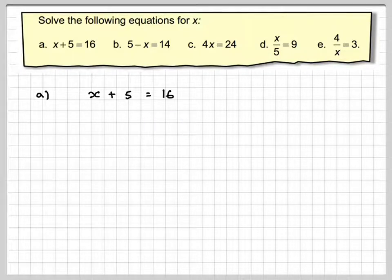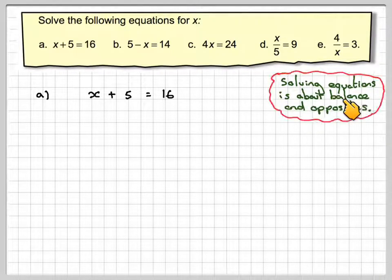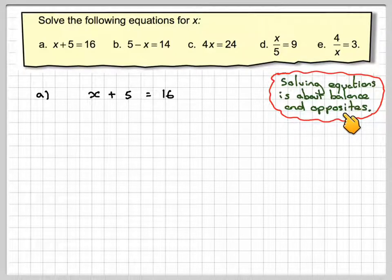So we've got x plus 5 equals 16. Now we've got to remember about equations - solving equations is about two things. It's about balance, so whatever you do to one side of the equation you must do to the other. And opposites: the opposite of adding is subtraction, the opposite of subtraction is adding, and the opposite of multiplying is dividing, and the opposite of dividing is multiplying.